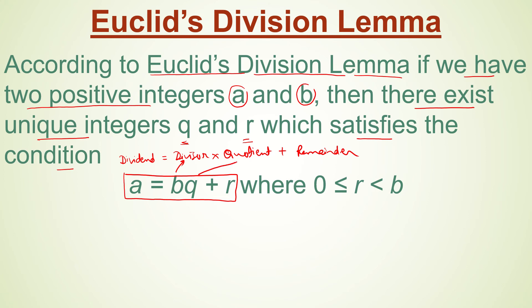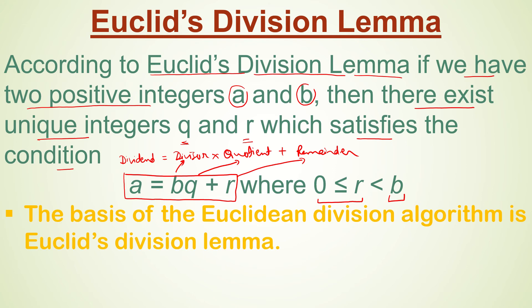Here, B is the divisor, Q is the quotient, and R is the remainder. The remainder is always less than the divisor, but it can be greater than or equal to 0. And the basis of Euclid's division algorithm is Euclid's division lemma.